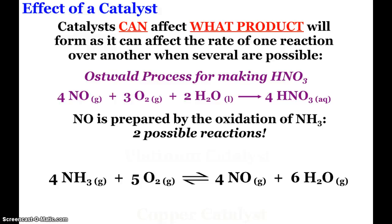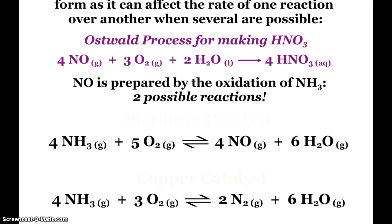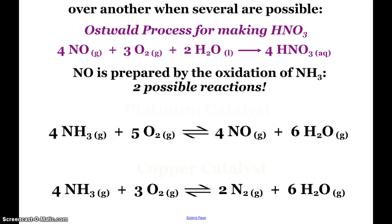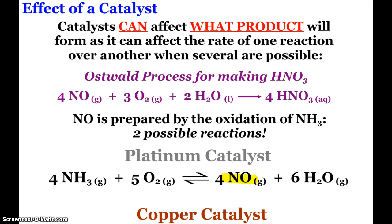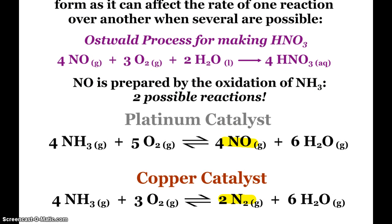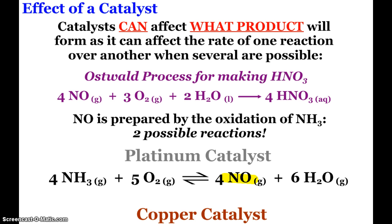What they can affect is what product will form if we have different possibilities. Here is the Ostwald process for making nitric acid. Nitrogen monoxide reacting with oxygen and water, and we get nitric acid. Where we get the nitrogen monoxide from is the oxidation of ammonia. And when ammonia oxidizes, there's two possible reactions. We can form nitrogen monoxide and water, or we can form nitrogen gas and water. And what can dictate that path is the catalyst. It's been found that when a platinum catalyst is used, we get the desired nitrogen monoxide. If copper catalysts are used, then that's when the nitrogen gas is produced. So the catalyst speeds up our reaction. It doesn't affect the equilibrium composition. It just affects how fast the reaction gets there. However, if there are more than one reaction possible, the catalyst can dictate which reaction will be chosen.